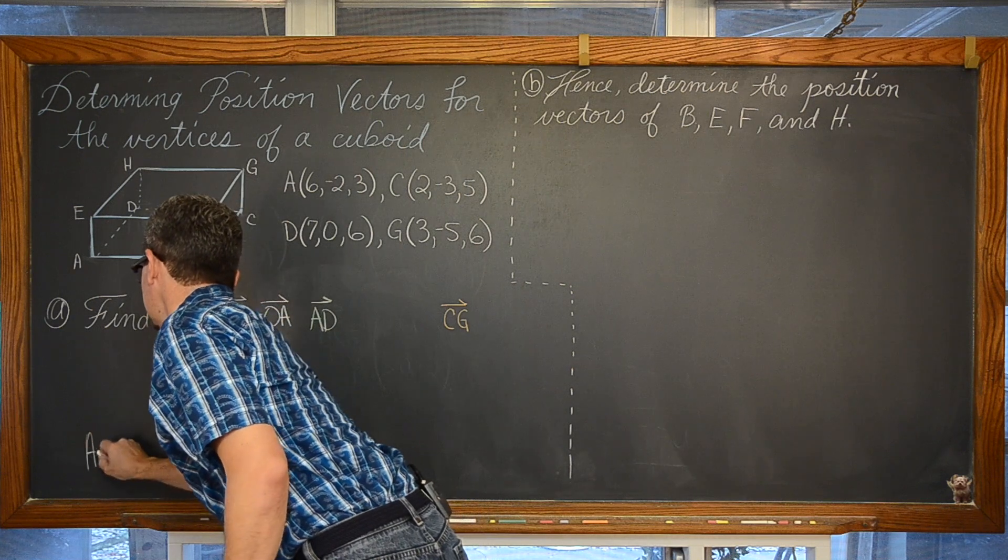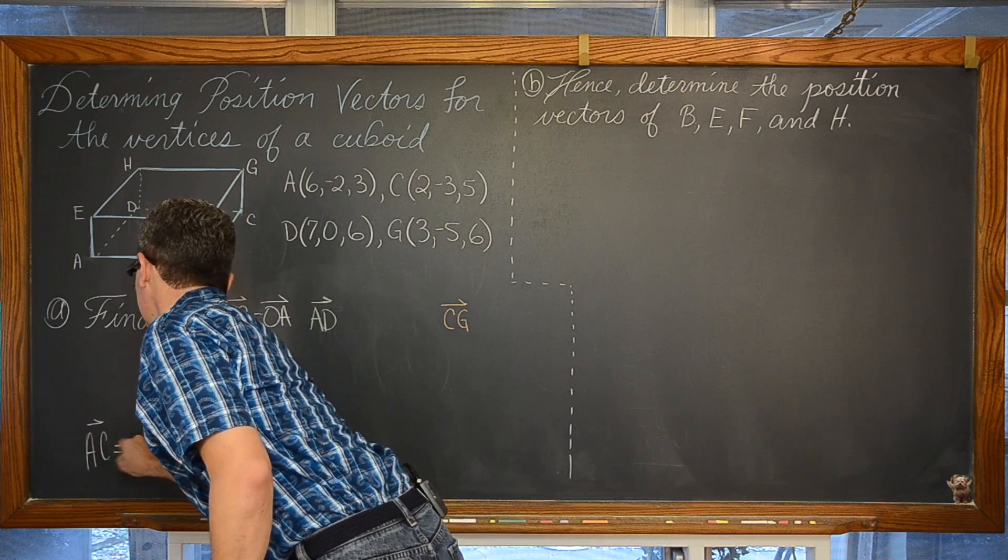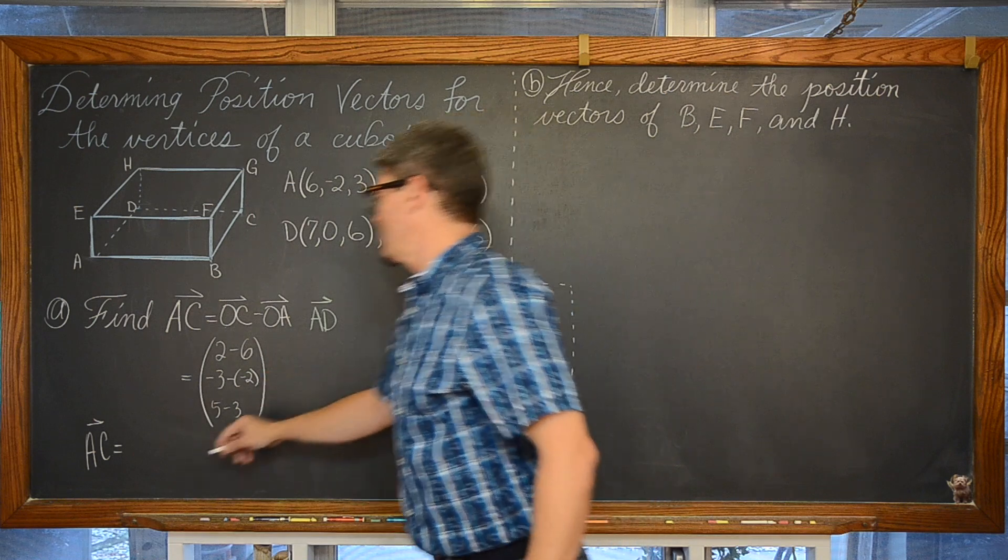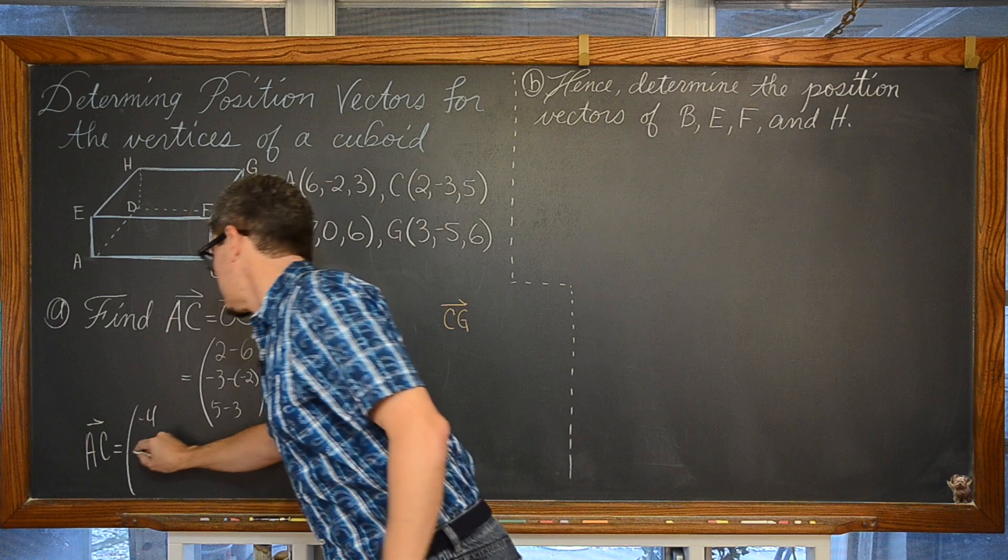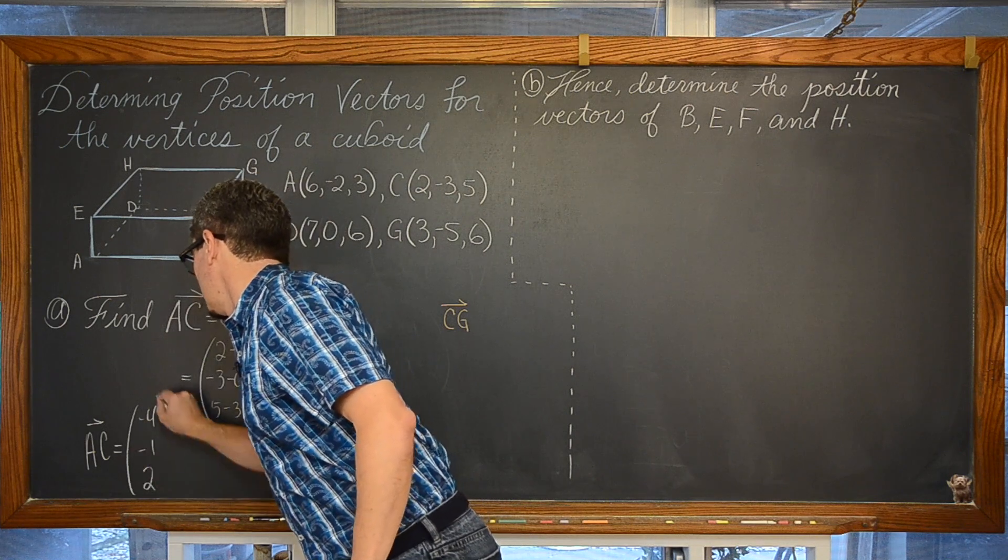So vector AC is going to be equal to negative 4, negative 3 plus 2 is negative 1, and 2.